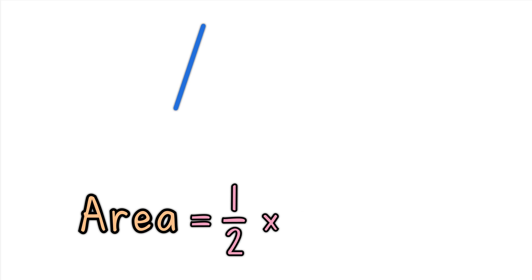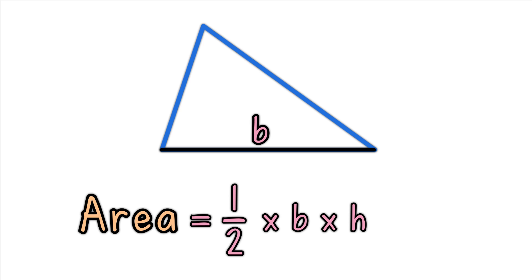Area. The area of a triangle is half of the base times the height. B is the distance along the base. H is the height, measured at right angles to the base.